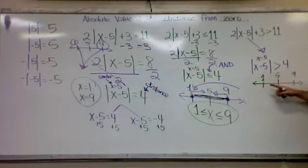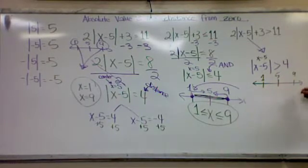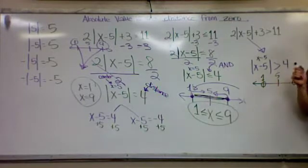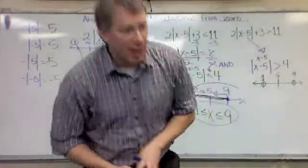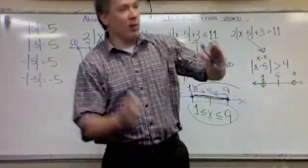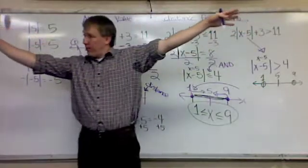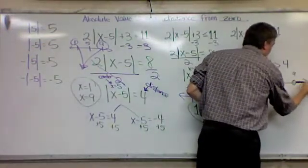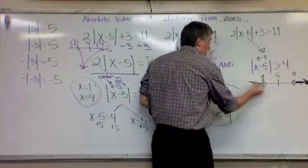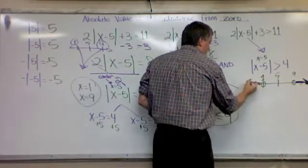Is this going to have solid or open dots? Open, because it does not equal. Now, here's the question. I want all the numbers that are farther than 4 away from 5. Greater than means a bigger distance. Yeah, so we're going to go away from 5. So I'm going to shade this way, and I'm going to shade that way.